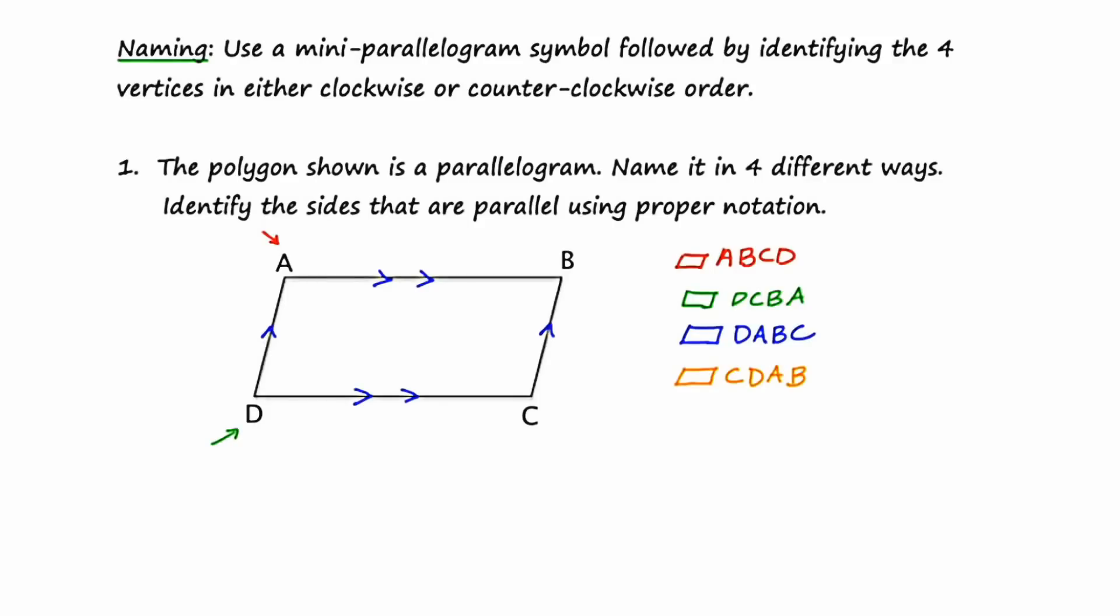Now, the last part of the question is to identify the parallel sides using proper notation. So right now, let's look at the top and the bottom segments. Those would be AB and DC. So I'm going to say that AB is parallel to DC. And I'm also going to say on the left and the right sides that segments AD and BC are also parallel. Okay, hold tight for the next slide.